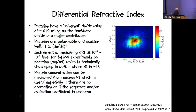Proteins tend to have a very universal refractive index increment of 0.19 mL/g. The reason is that most of the polarizability comes from the backbone, which is obviously a universal feature of proteins. There are side chain contributions, but a study looking at 62,000 different protein sequences — simulating the refractive index increment based on individual amino acids — showed the distribution is pretty small and close to this value. This also reflects that proteins are polarizable and scatter well.